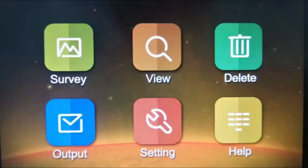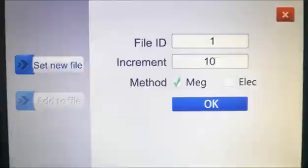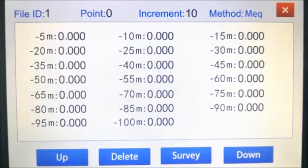When the detector switches on, click anywhere in the touch screen to enter the system. Click survey, choose set new file, input file ID number, choose the measurement method. Click confirm and then check the details.